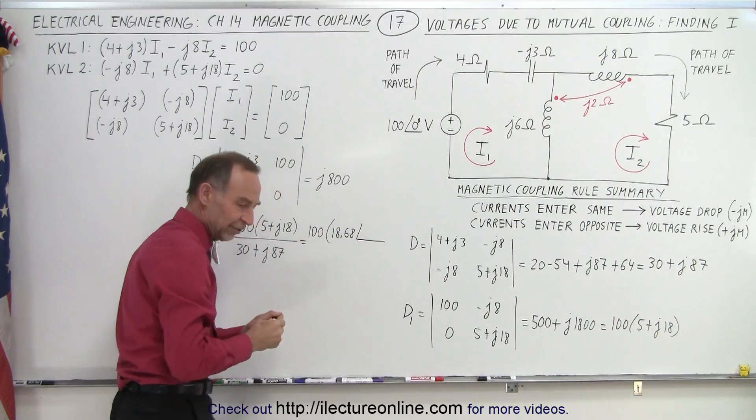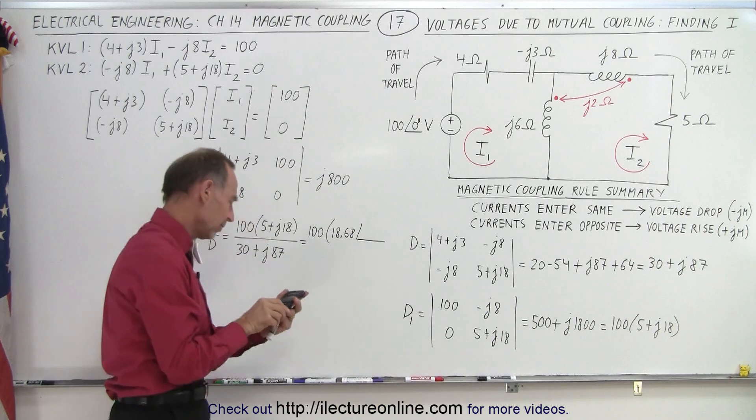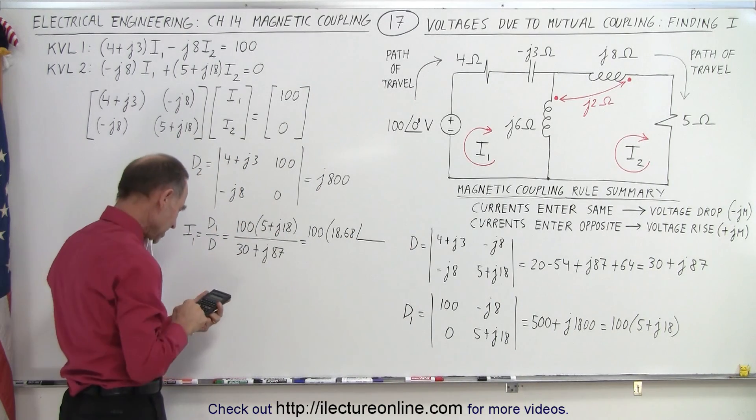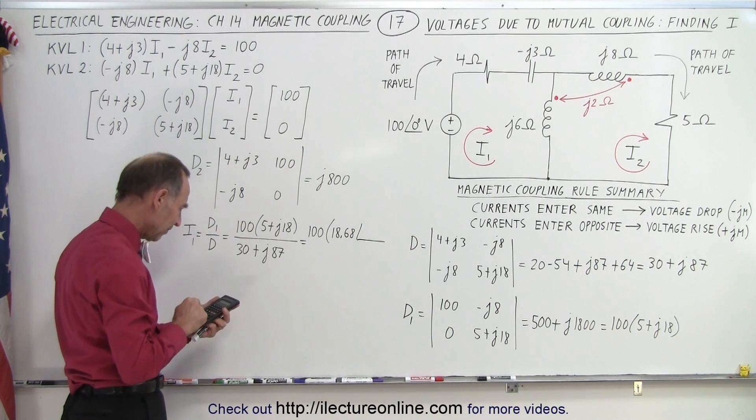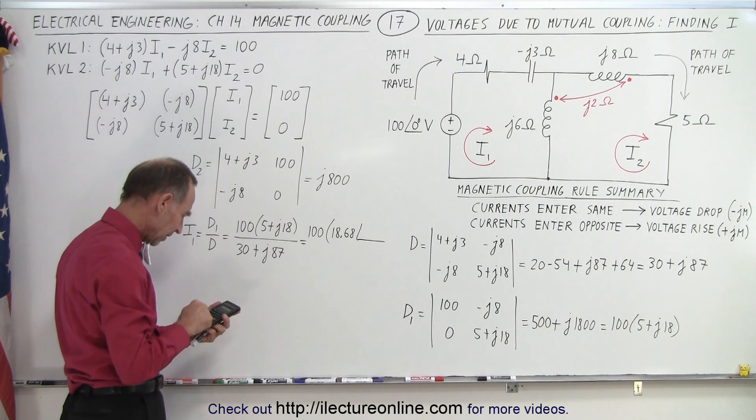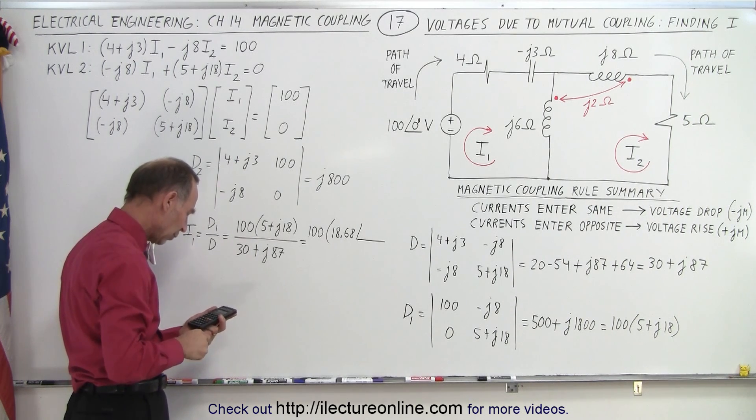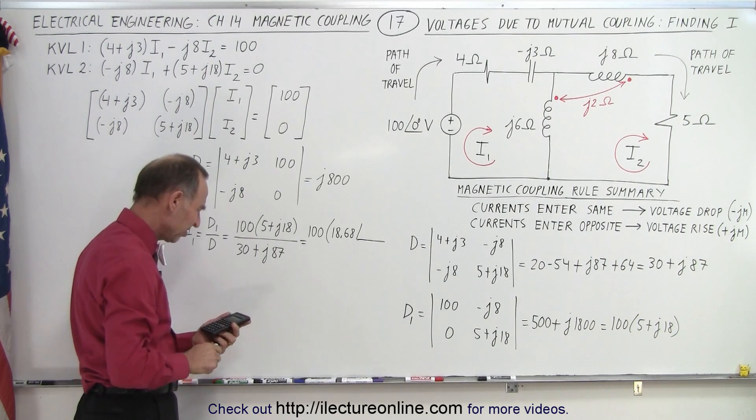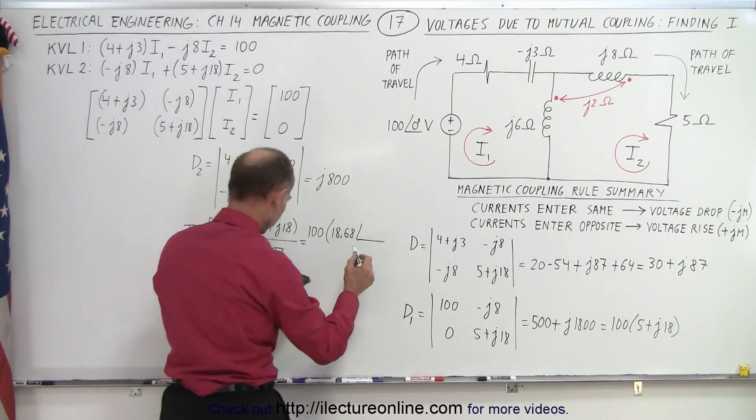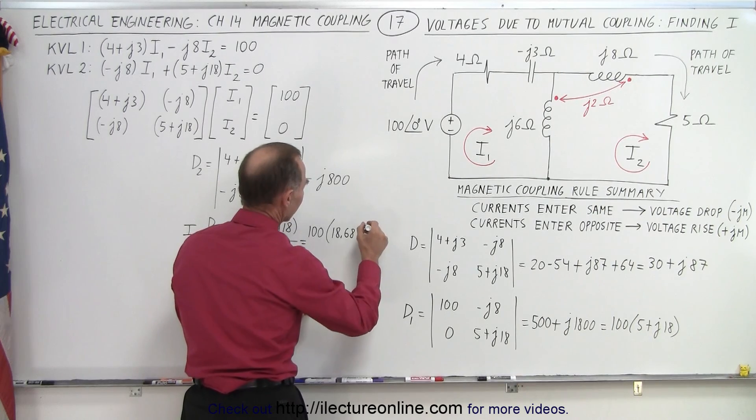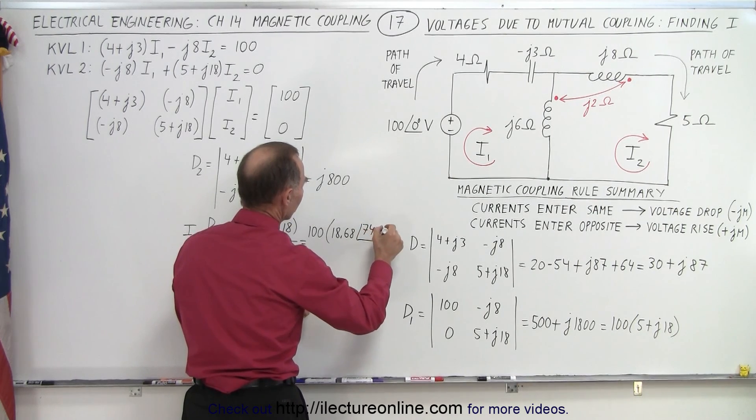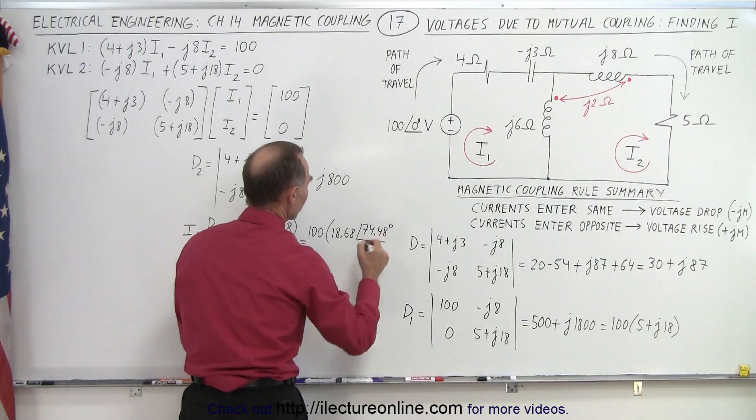With a phase angle of, so now we have 18 divided by 5, and we get the inverse tangent, that would be 74.476, so 74.48 degrees to two decimal places.